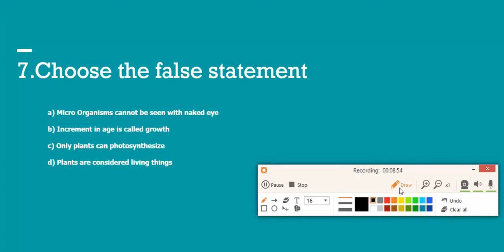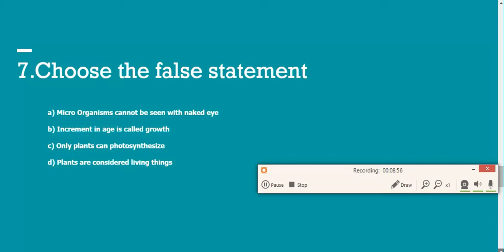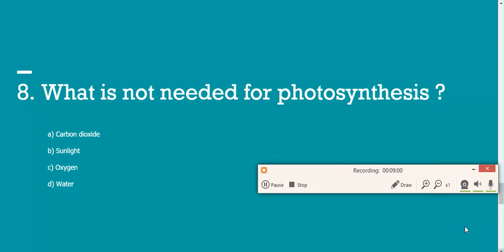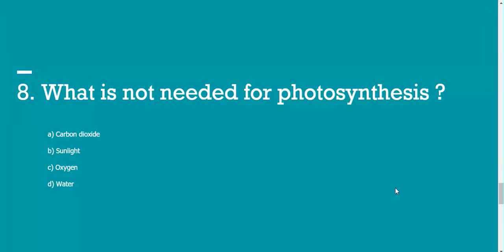Moving on to the next question, number eight. It says what is not needed for photosynthesis. Carbon dioxide is needed, sunlight is needed, water is needed, oxygen is not needed in the photosynthesis. Even though plants need to breathe, in the process of photosynthesis it is not needed.